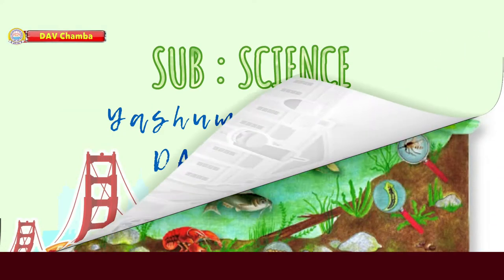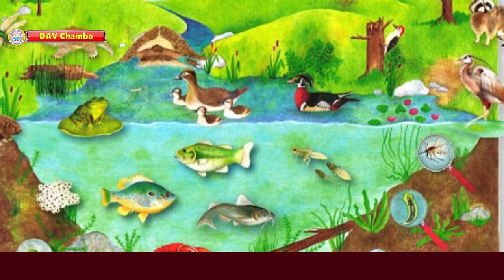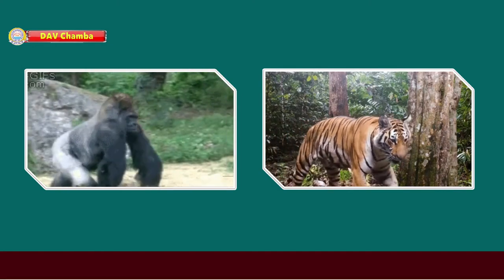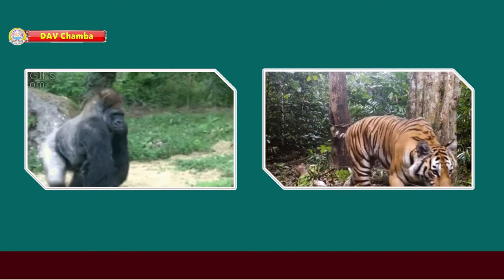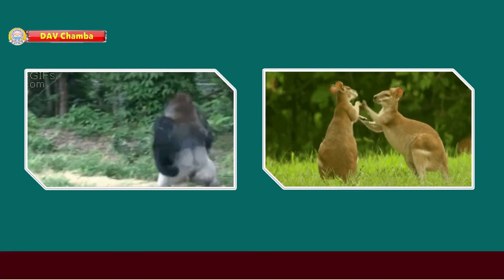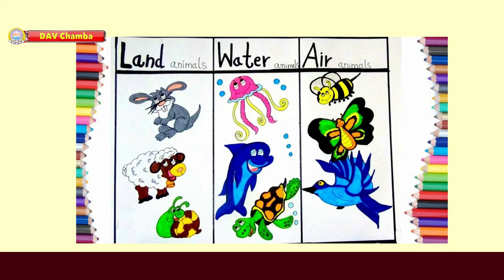Hello students, today we are going to understand the habitat of different animals. Animals are classified into three categories on the basis of their habitat: land animals, water animals, and air animals.